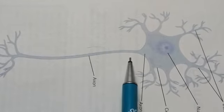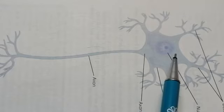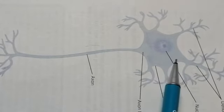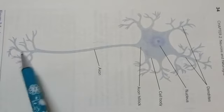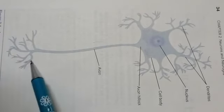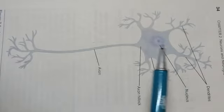This axon is the main efferent pathway carrying the impulse from the cell body. This axon is terminated into several other branches that are called axonal terminals.